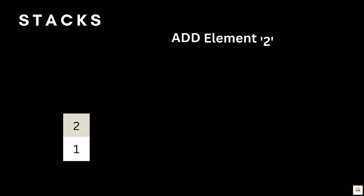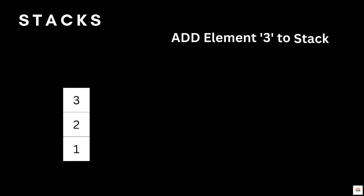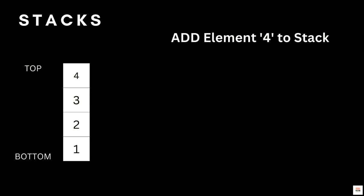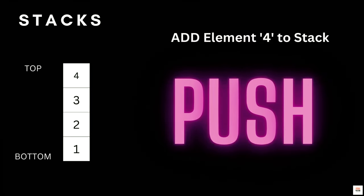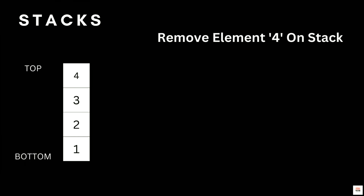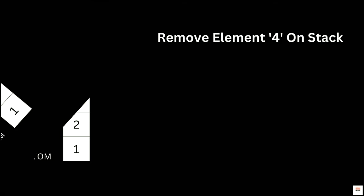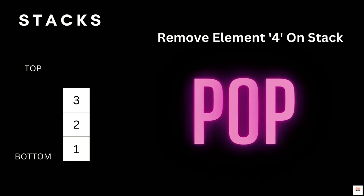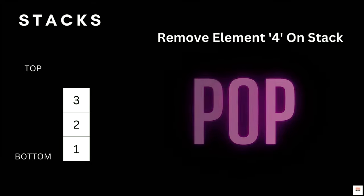For a numerical example: element 1 is present, element 2 is added on top of 1, element 3 on top of 2, and element 4 on top of 3. The process of adding elements is done by the push function, which pushes elements onto the top. To remove the top element — here element 4 — that is called pop. Push and pop are the two primary operations.